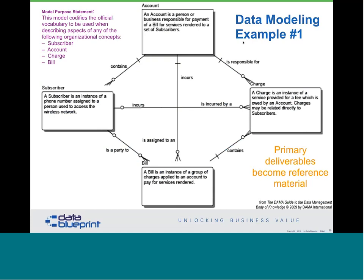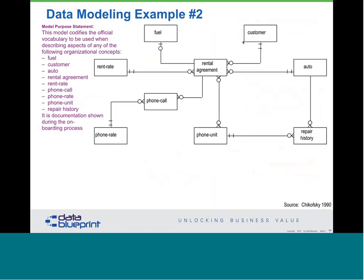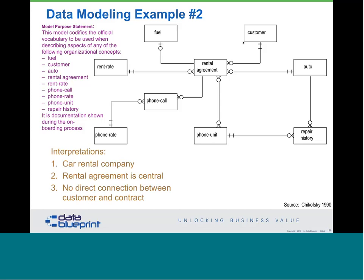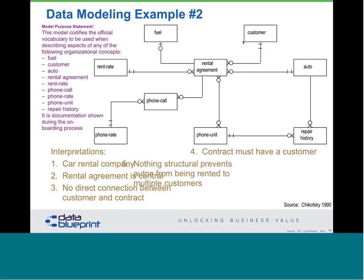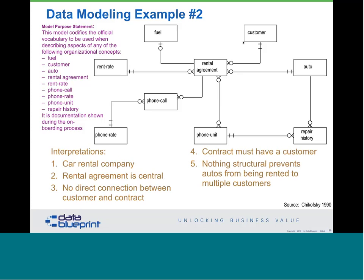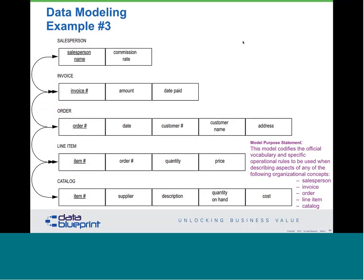These data models define vocabulary. This organization used this particular model to describe accounts, subscribers, charges, and bills — very nice articulation that everyone had and understood, so they were all speaking the same language. Here's another model talking about official vocabulary when using fuel, customers, autos, and so on. We can tell just looking at this model that it's a car rental company and that the rental agreement is clearly central to everything else — not because it's in the center, but because it's connected to more things. There is no direct connection between customers and contacts, and nothing structural prevents an auto from being rented to multiple customers.